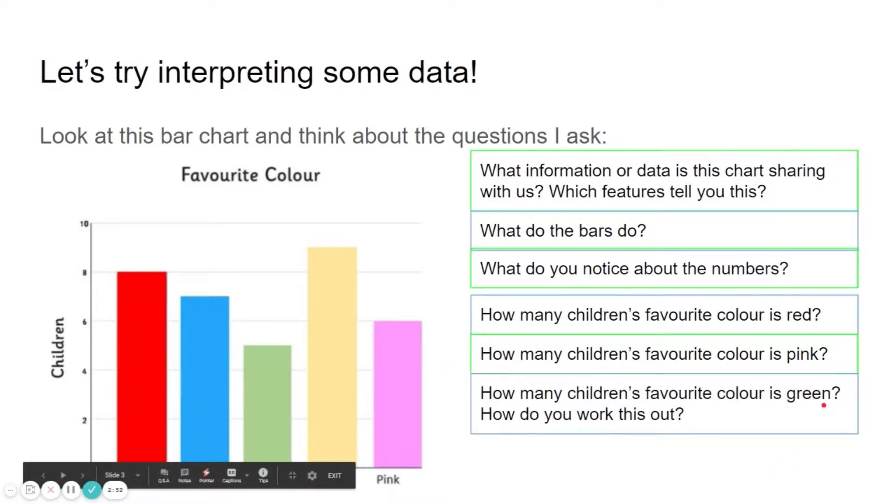How many children's favourite colour is green? Well like before, we go to the top of the bar, we go along to here, to the numbers, and you can see that it's directly between four and six. So what is the number between four and six on a number line? It is five. So there's five children that chose green.